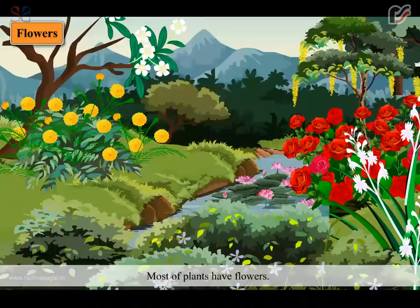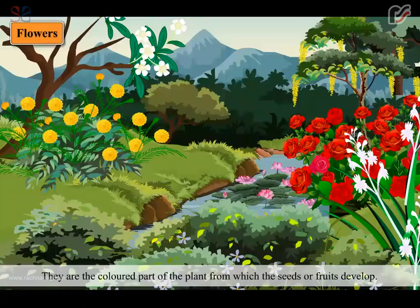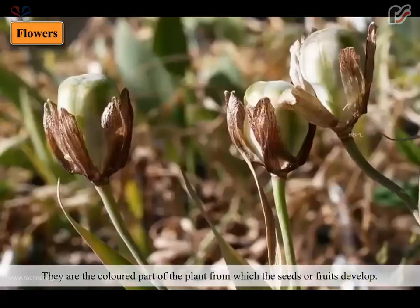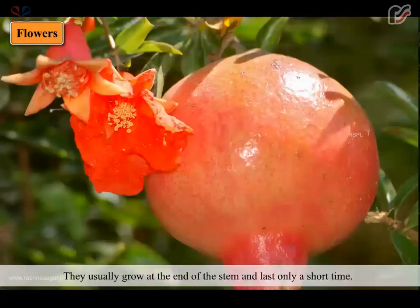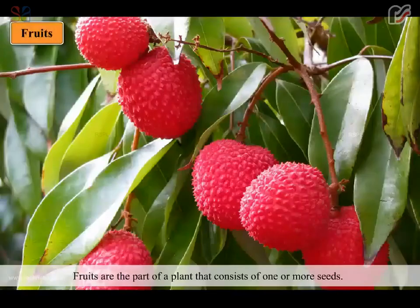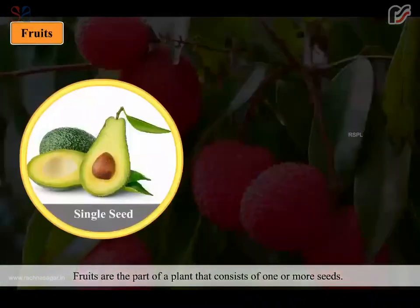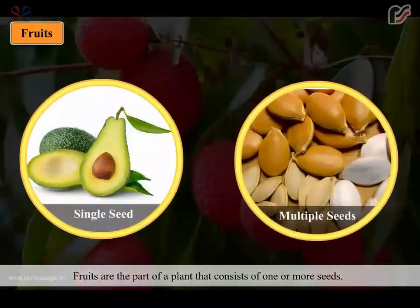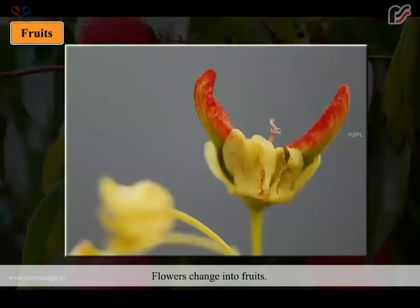Most plants have flowers. They are the colored part of the plant from which the seeds or fruits develop. They usually grow at the end of the stem and last only a short time. Flowers change into fruits.